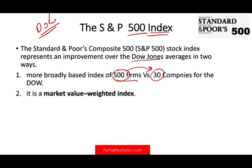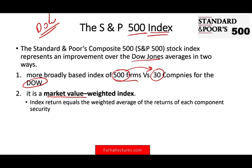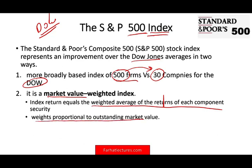The other thing is it's a market value weighted index versus a price weighted index. When we talked about the Dow, the Dow is a price weighted index. The S&P is market value. The index return equals the weighted average of the return of each component security, weighted proportionally to the outstanding market value — which is the price of the stock times the outstanding shares. The S&P is market value weighted, not based on the price of the stock. It's based on size — price of the stock times how many shares. If the price goes up and you have a lot of shares, you weigh more.